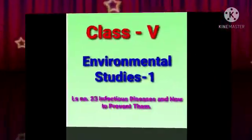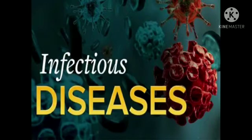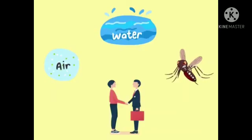Class 5 Environmental Studies, Part 1, Lesson No. 23: Infectious Disease and How to Prevent Them. Next we are going to see about the different ways in which infectious diseases spread. This disease spreads through air, water, food, insects, and through contact. Today we are going to see all these diseases and how they spread through each concept in detail.